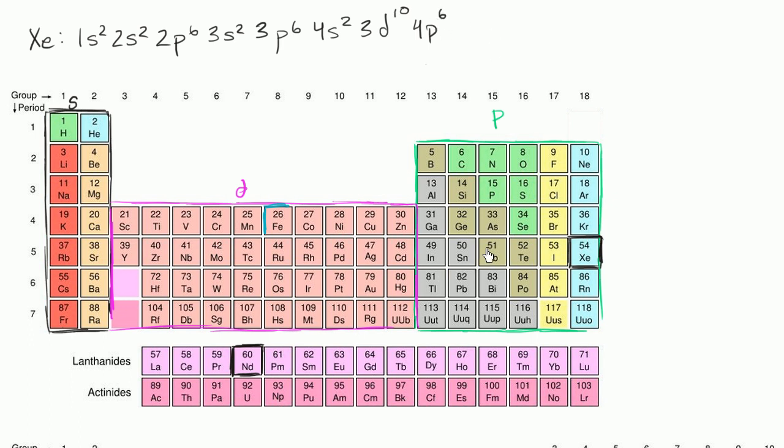And then we go to the fifth period, 5s2. And then we're going to go, the period is 5, but we're in the d-block. So we're going to go back to the 4d subshell, 4d10. And then we come back, and xenon perfectly fills out the 5p subshell, 5p6.